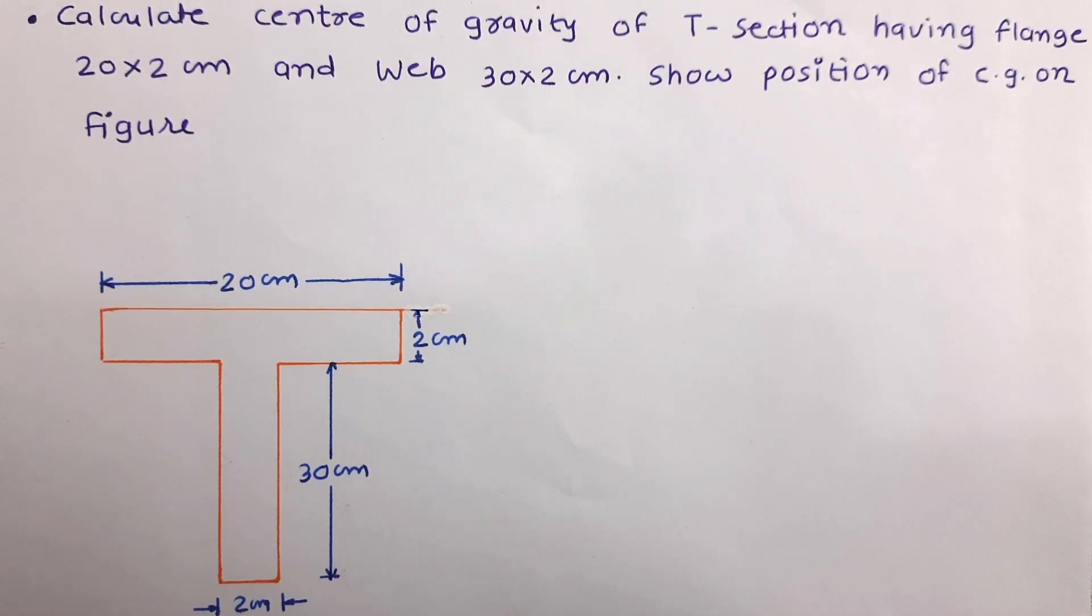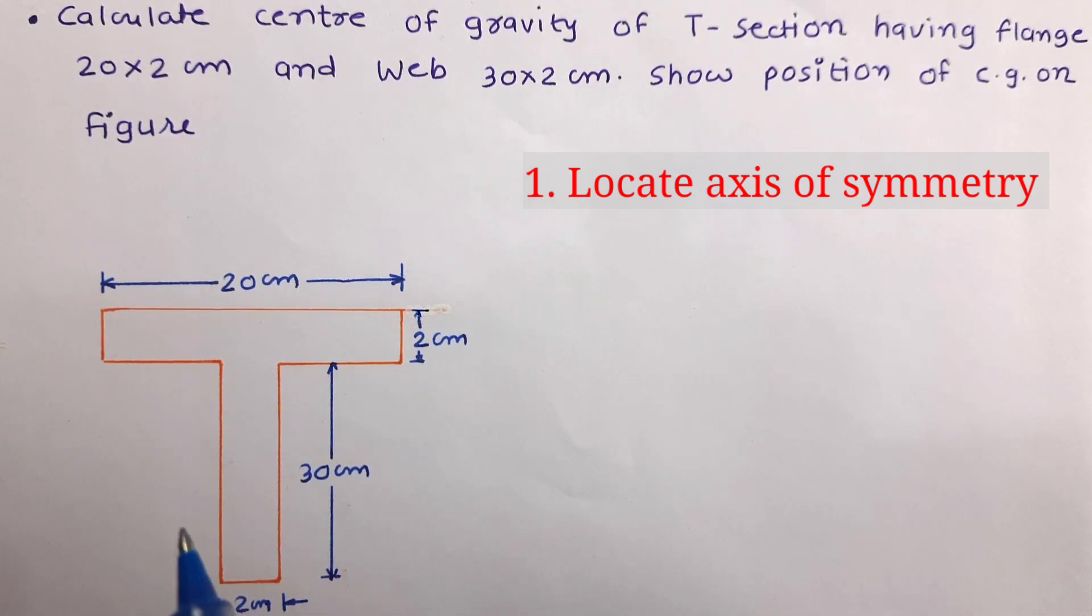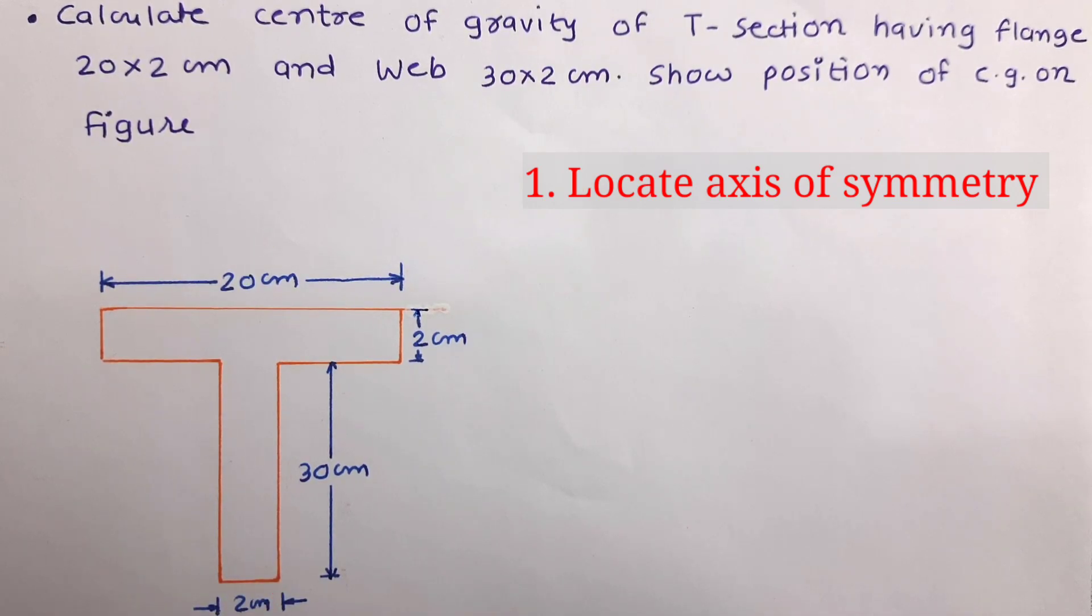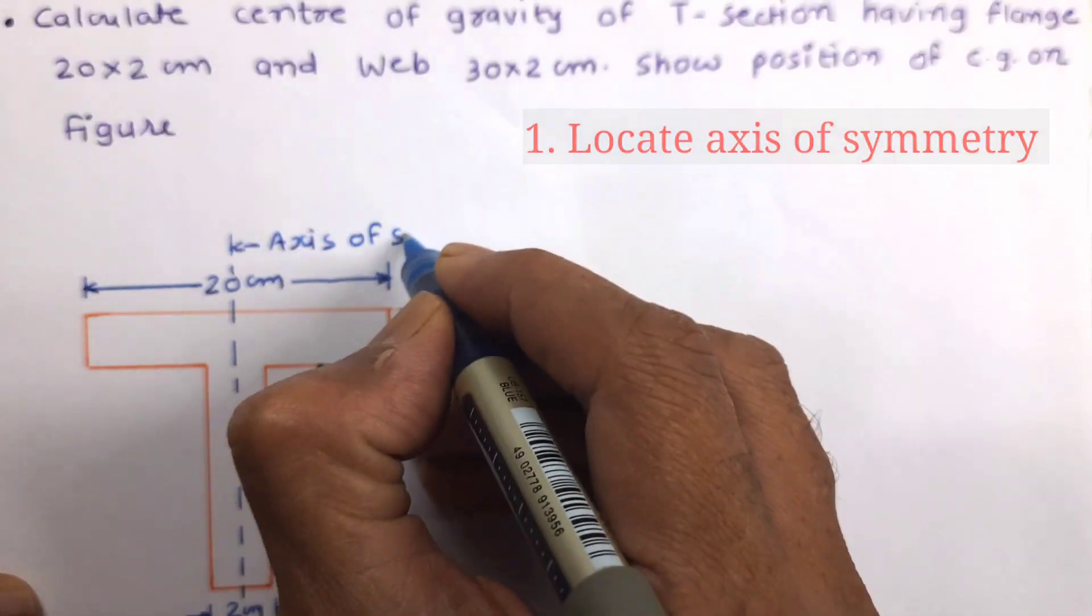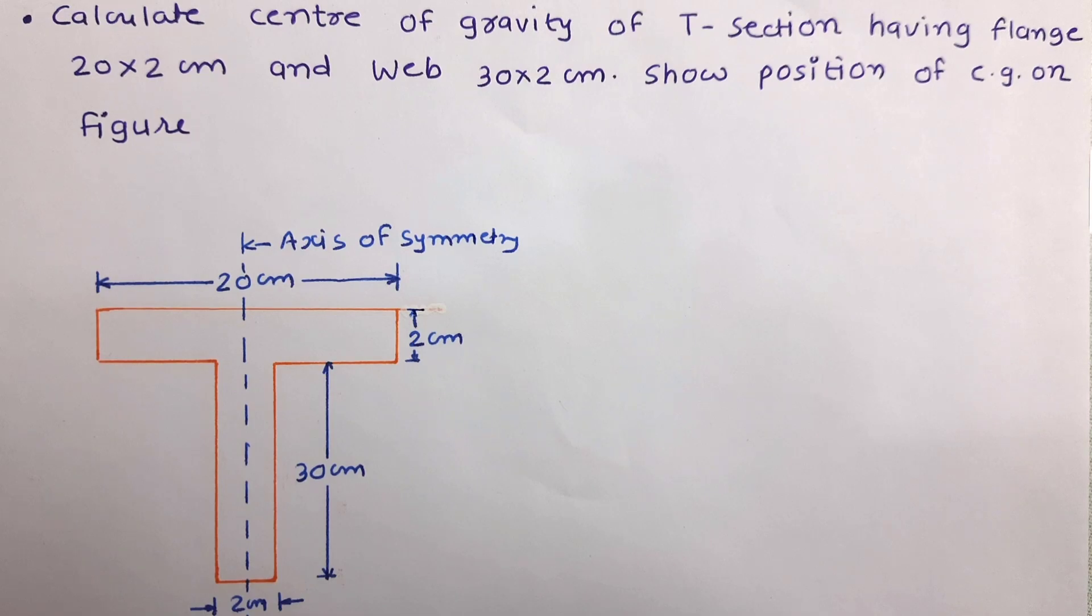Now, let us follow this step to solve this problem. As we have discussed, the first step is to determine axis of symmetry is available or not. So from the figure we can see the figure is symmetric about the axis parallel to y. So let us identify this axis. So axis of symmetry is parallel to y axis. So we can say x bar will be directly available.